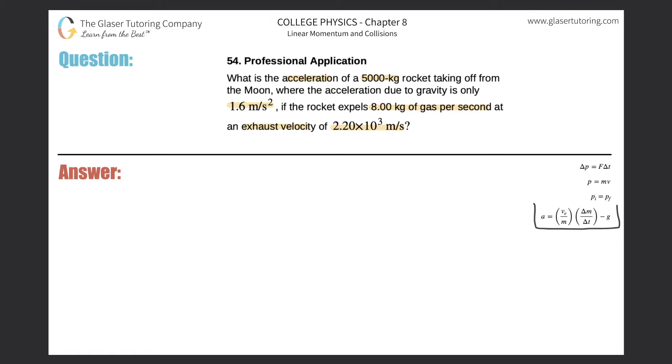This question is basically the same as the last question, just that g changes, so we're going to use this equation on the right hand side. The acceleration equals v_e, the exhaust velocity, which is 2.20 times 10³, divided by the mass of the object, which is 5000, multiplied by the change in mass per time. The rocket is expelling 8 kilograms of gas per second, and the units for change in mass over time is kilogram per second, so that's just a value of 8.